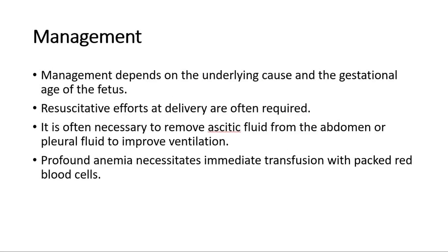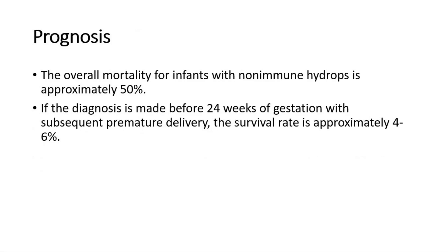Management depends on the underlying cause and the gestational age of the fetus. Resuscitative efforts at delivery are often required. It is often necessary to remove ascitic fluid from the abdomen or pleural fluid to improve ventilation. Profound anemia necessitates immediate transfusion with packed red blood cells. The overall mortality for infants with non-immune hydrops is approximately 50%. If the diagnosis is made before 24 weeks of gestation with subsequent premature delivery, the survival rate is approximately 4-6%. That's all for this video.